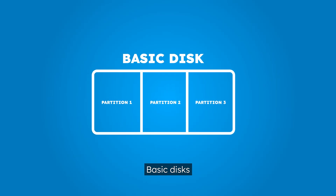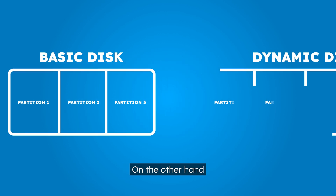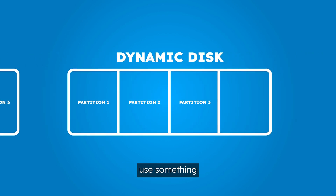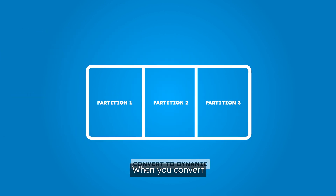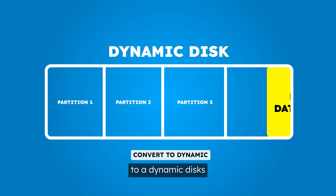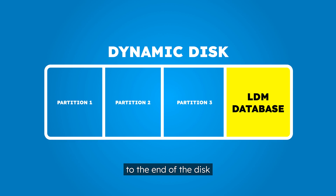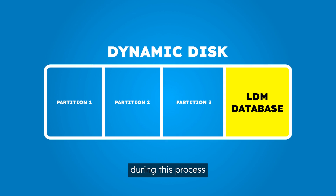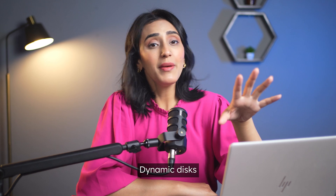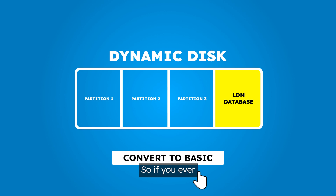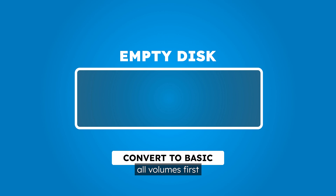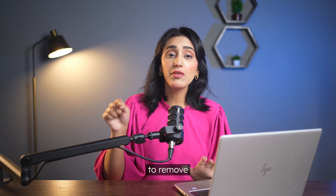In Windows, basic disks use a traditional partition table to manage data. On the other hand, dynamic disks use something called LDM — Logical Disk Manager database — to keep track of disk information. When you convert a basic disk to a dynamic disk, Windows adds this LDM database to the end of the disk. Your data stays safe during this process. However, here's the catch: dynamic disks fully rely on the LDM database instead of the standard partition table. So if you ever want to convert it back to a basic disk, you'll need to delete all volumes first. This is necessary to remove the LDM database and rebuild a proper partition table.